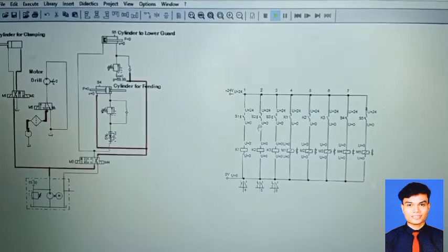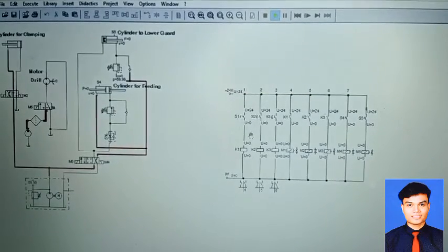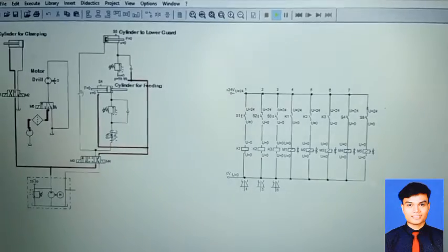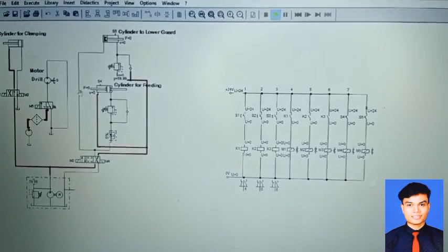Turn on the S2. The cylinder for clamping will be retracted. Then, we can move out the work piece from the system.